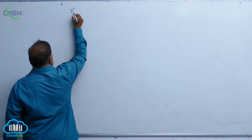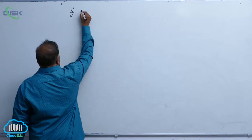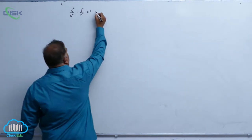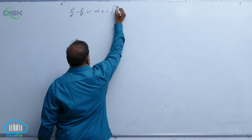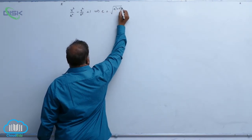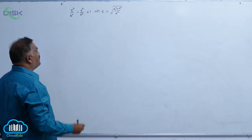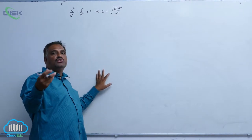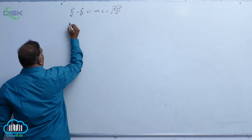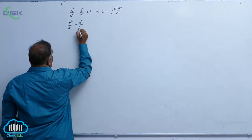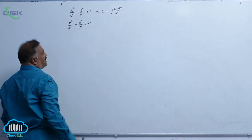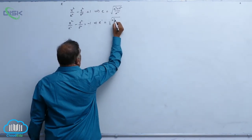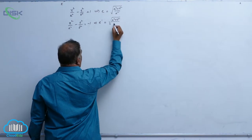We have seen that for the standard hyperbola x²/a² - y²/b² = 1, the eccentricity is given by e = √((a² + b²)/a²). Now if this hyperbola is rotated by an angle of 90 degrees, it is called a conjugate hyperbola. The equation is given by x²/a² - y²/b² = -1, and its eccentricity e₁ = √((a² + b²)/b²).